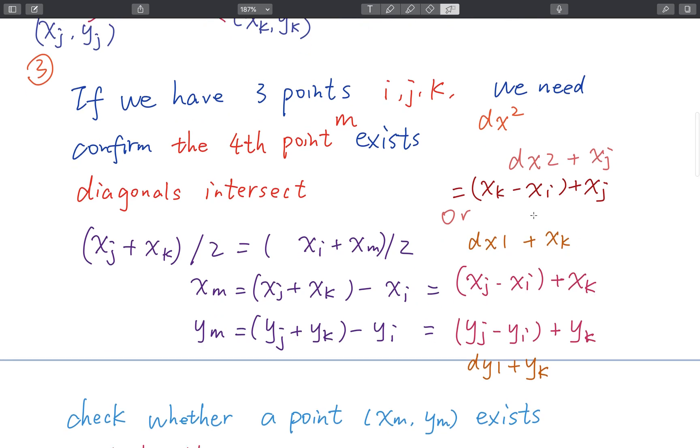So now we get these two coordinates, which is X. This is Y. We need to check whether this point exists in the given points set. How to check that?